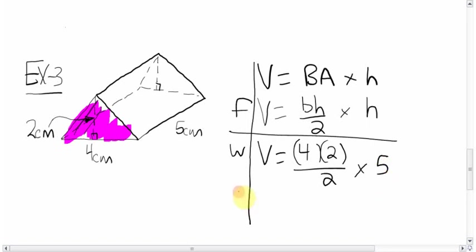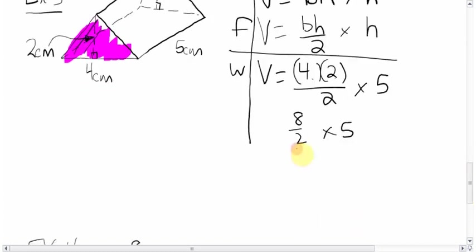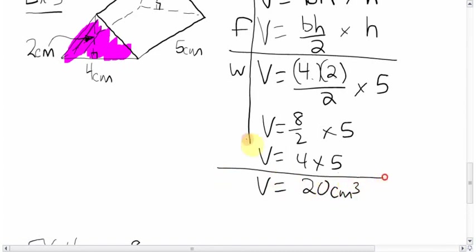So we punch this all in. 8 over 2 times 5, which is the same thing as 4 times 5, gives you a final answer of 20 centimeters cubed. That is your final answer. Done.